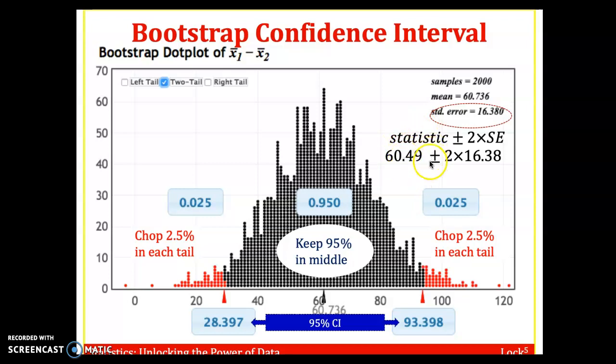and there we get 27.73 to 93.25. So not exactly the same thing, but pretty close. We're less than one off on the lower limit, and we're very close on that upper limit. But two different methods to get a 95% confidence interval from chapter three.